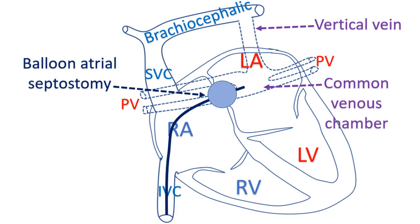TAPVC with a large ASD can survive long without many symptoms, but those with a small ASD need emergency surgery. The initial procedure can be enlargement of the ASD by balloon atrial septostomy, using balloon catheters usually introduced through the umbilical vein. The baby is then considered for corrective surgery after stabilization. Those with the infracardiac variety will need emergency corrective surgery because of severe breathlessness, while those with a large ASD also need elective surgical correction.